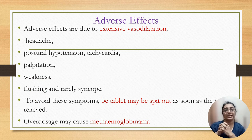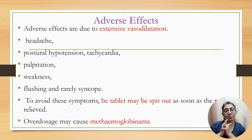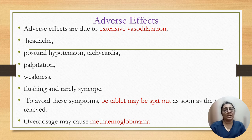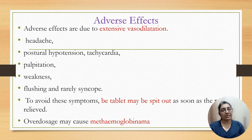Adverse effects of nitrates are due to extensive vasodilatation and include headache, postural hypotension, tachycardia, palpitation, weakness, flushing, and rarely syncopal attacks. These side effects can be reduced by having the patient spit out or swallow the drug after pain is relieved. Because first-pass metabolism is very high, the drug can be metabolized in the GI tract. Overdose can cause methemoglobinemia.